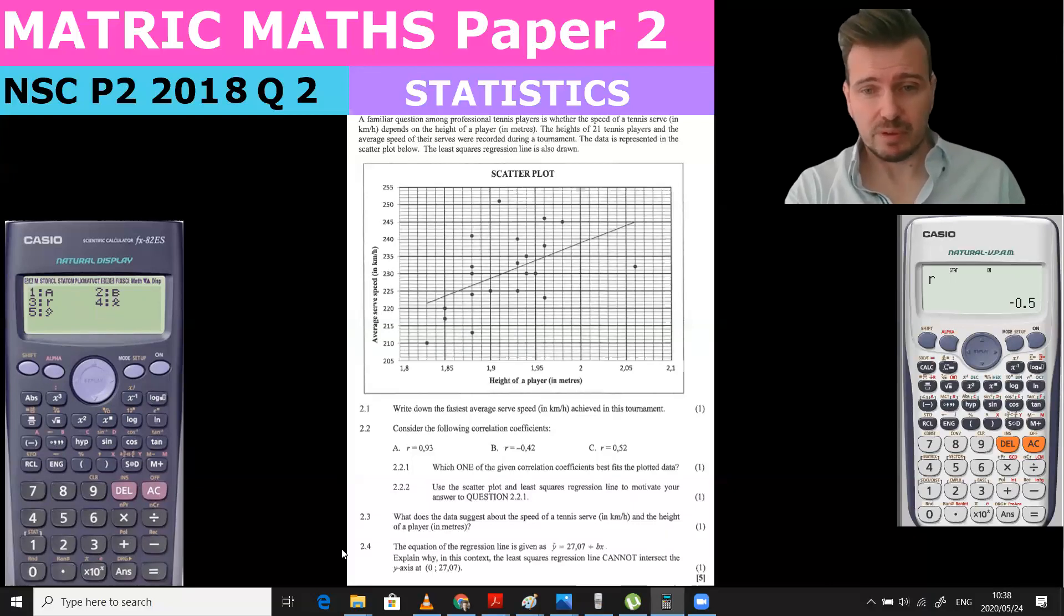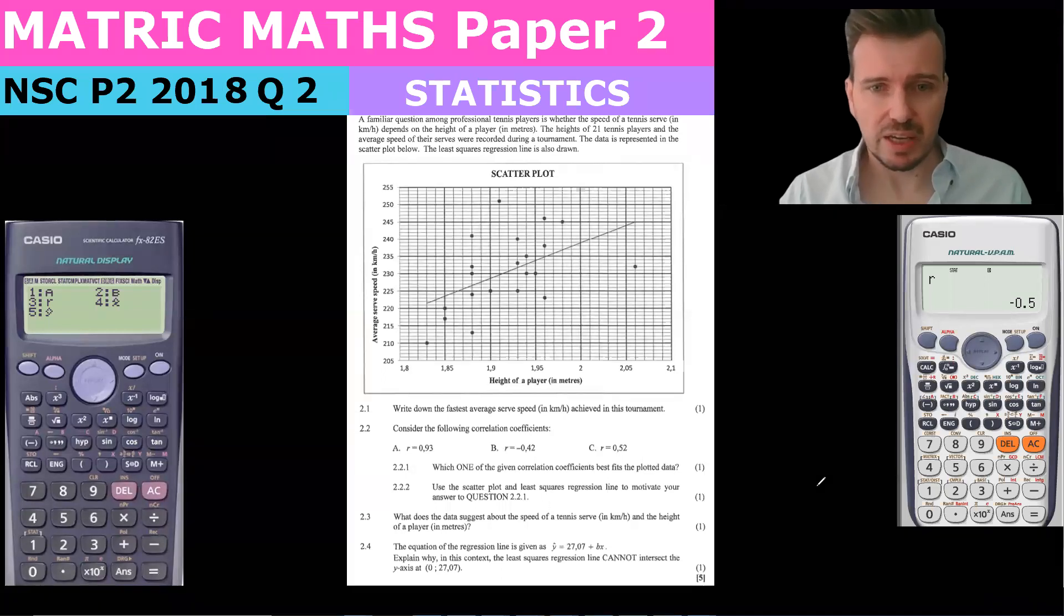Let's look at this question. They want the fastest average serve speed achieved in the tournament. A nice simple question to begin with. We look for the fastest average speed, question 2.1, and that is 251 kilometers per hour.